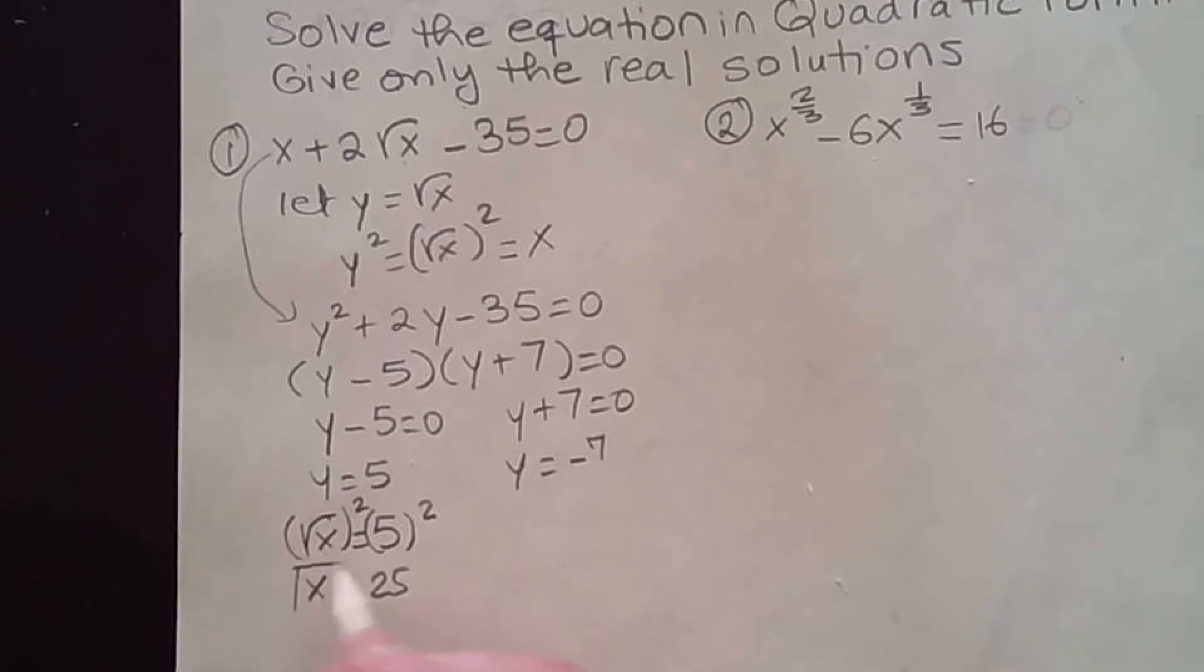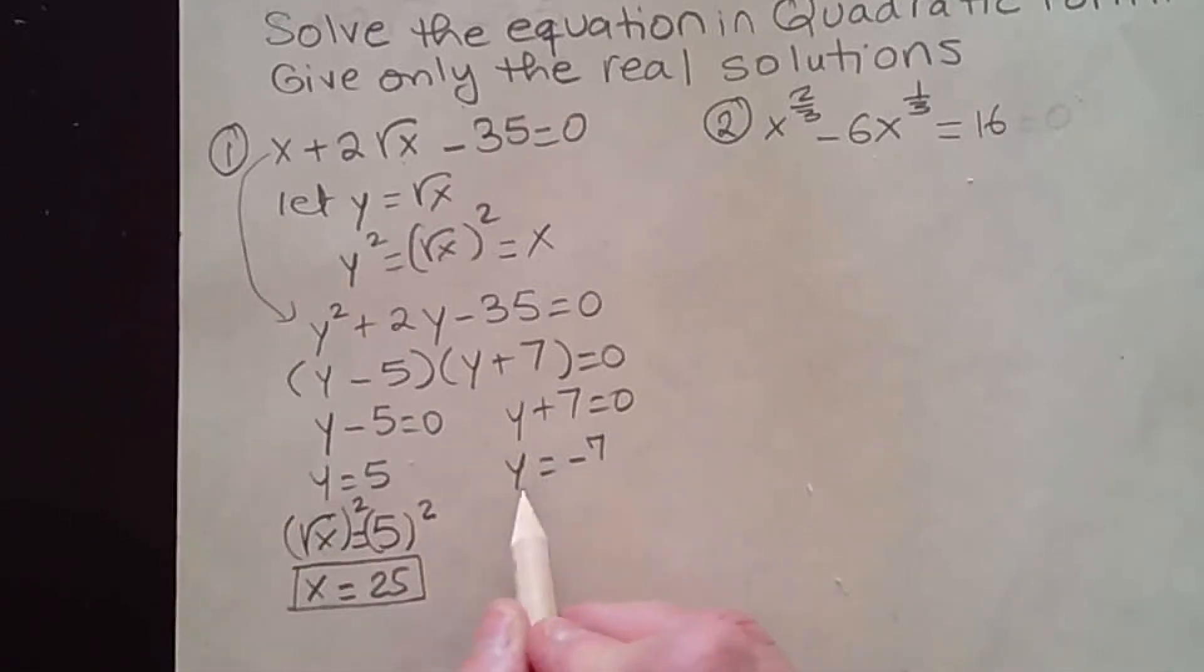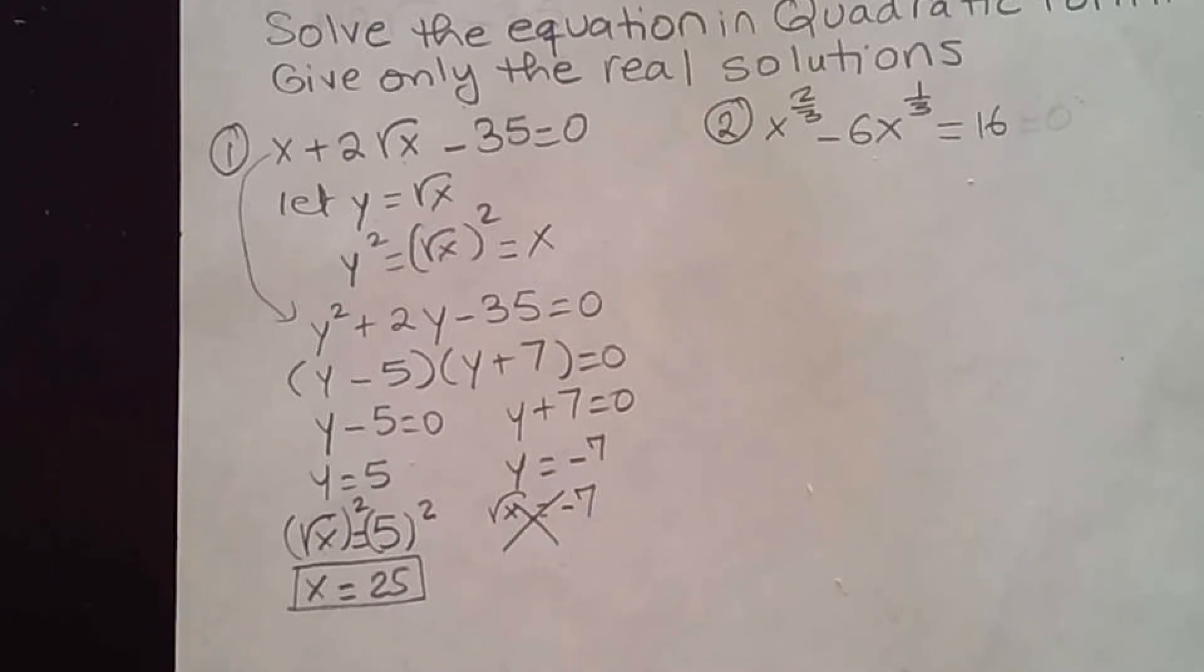So this is one solution. And here, square root of x equal to negative 7. So this one does not have a real solution. They only want the real solution, so the only solution for this one is x equal to 25.